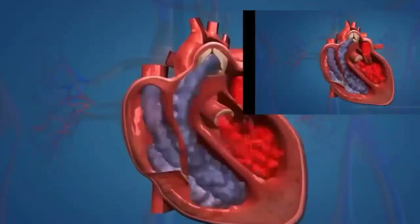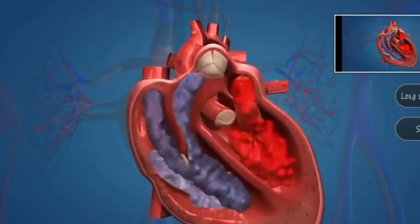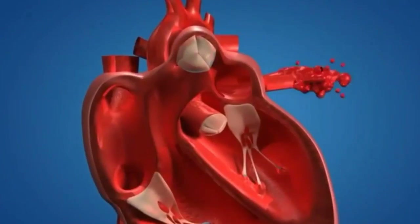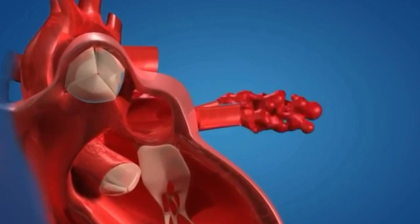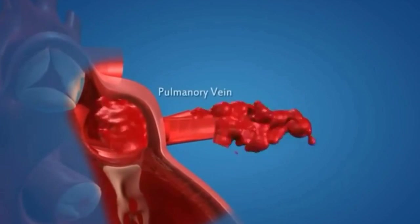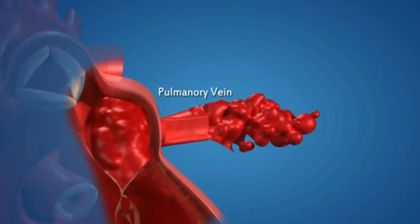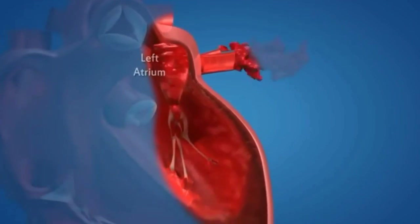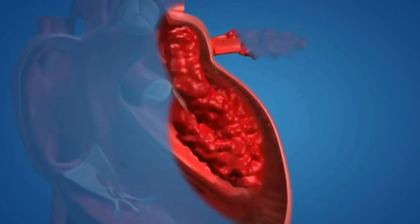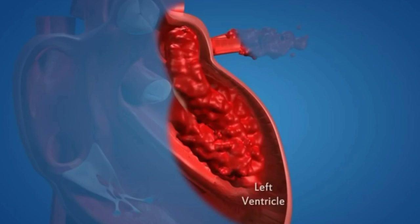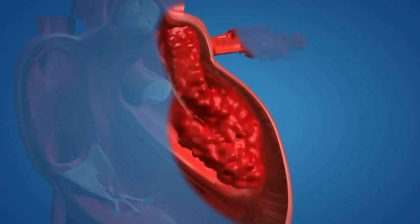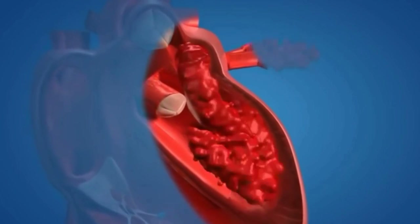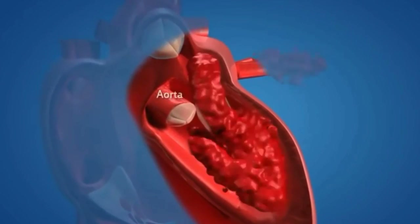The circulation is a constant, repeating process. Step one: pulmonary veins from the lungs bring oxygen-rich blood to the left auricle. Step two: by the opening of the mitral valve, blood enters from the left atrium into the left ventricle. From the left ventricle, blood enters the major artery — the aorta.